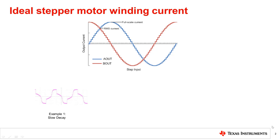While slow decay does lead to a lower ripple current, as shown in example 1, the downside is that it cannot bring the current down quickly enough after a low-inductance winding current is driven up during the high-side fast blanking time. Slow decay also struggles to bring the current down quickly enough after a high back-EMF pushes the winding current up, as shown in example 2.